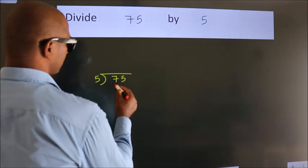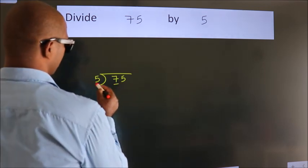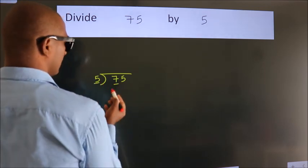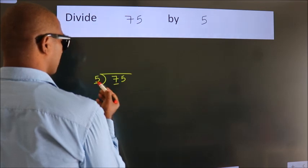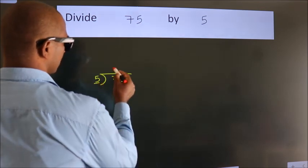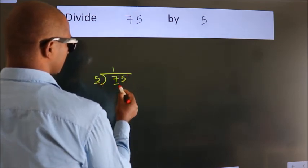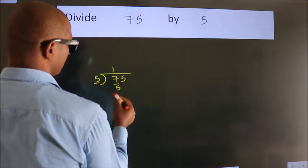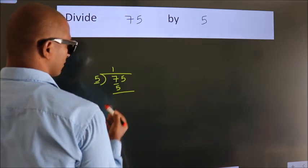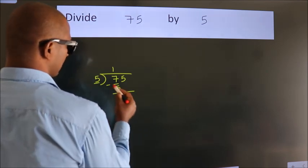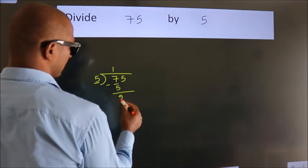Here we have 7, here 5. A number close to 7 in the 5 times table is 5 — 5 once is 5. Now we should subtract. We get 2.